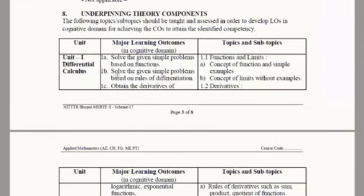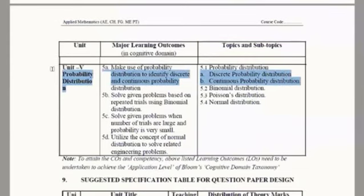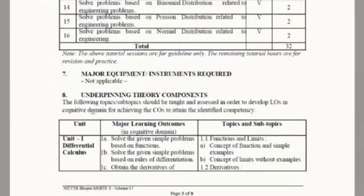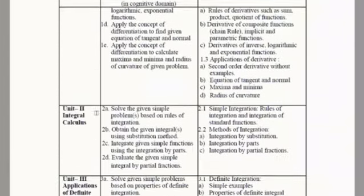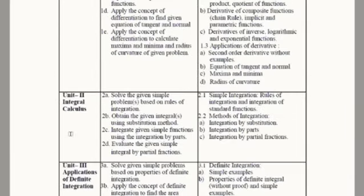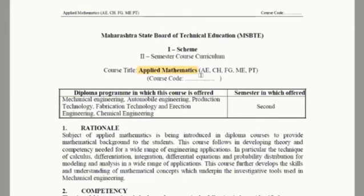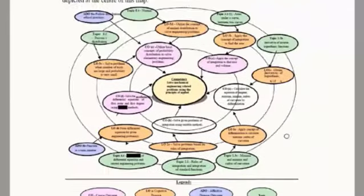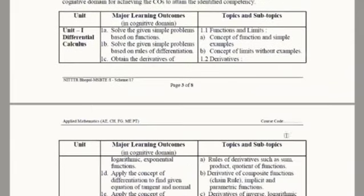We will discuss the basics of Applied Mathematics and the actual syllabus we have to study in Semester Two, one by one for all disciplines. In the syllabus, there are a total of five chapters. Chapters one through four have a common syllabus for all students, whereas Chapter Five is different for each stream.